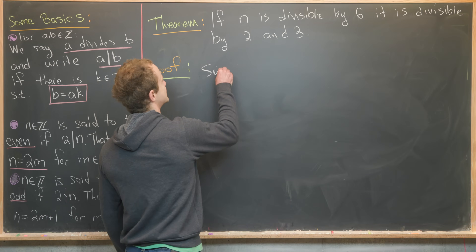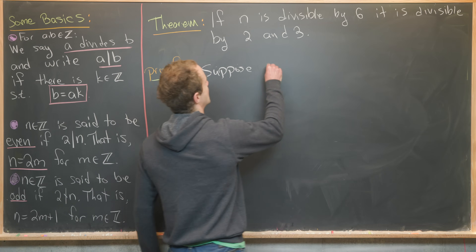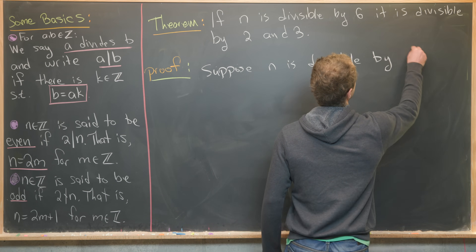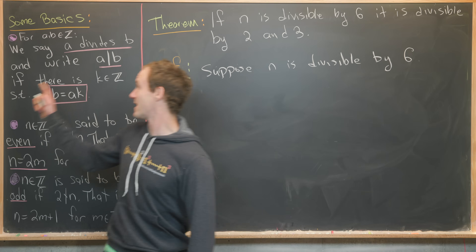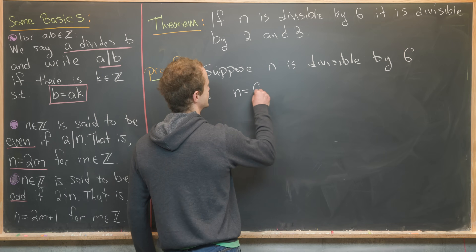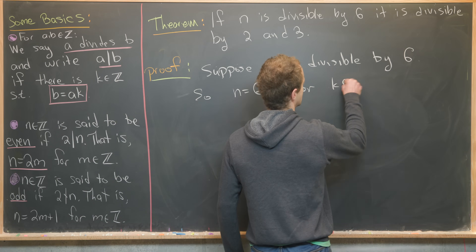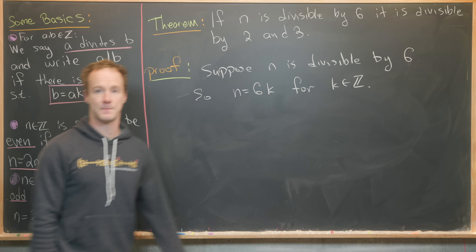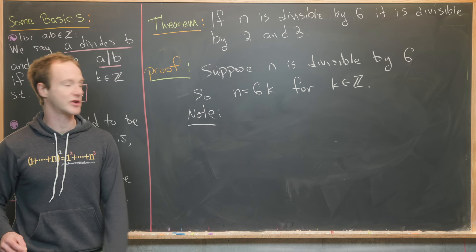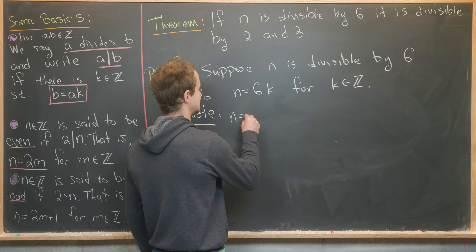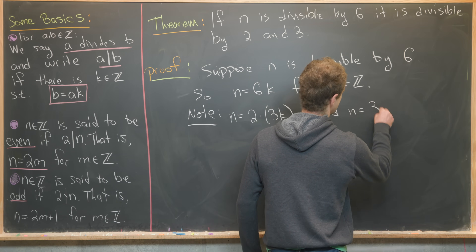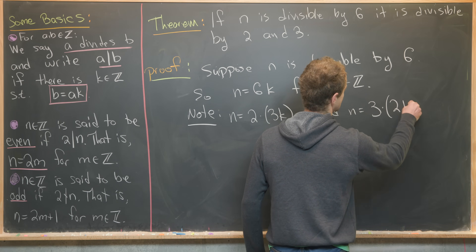We need to show that if n is divisible by six, then it's divisible by two, and also divisible by three. But we can do most of that calculation all at once. So let's suppose n is divisible by six. Using the definition of divisibility, that means n equals 6k for some integer k.